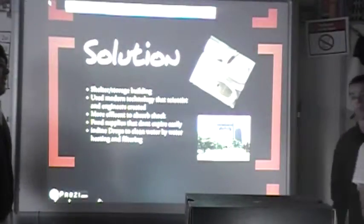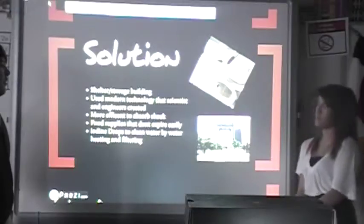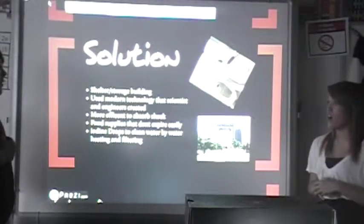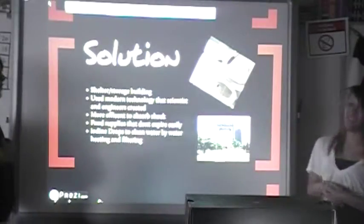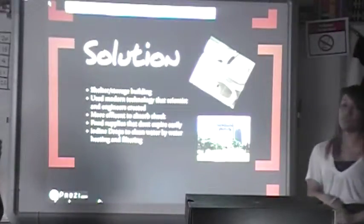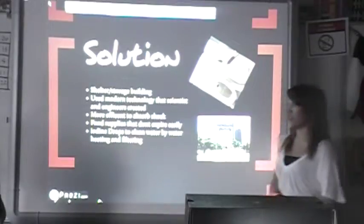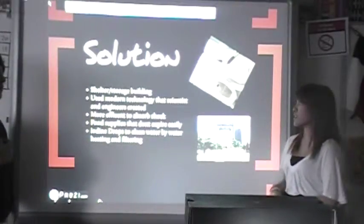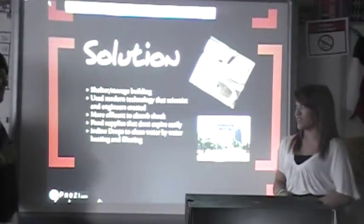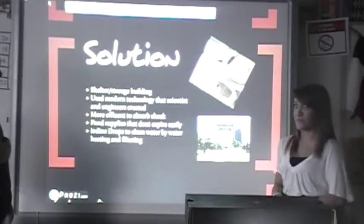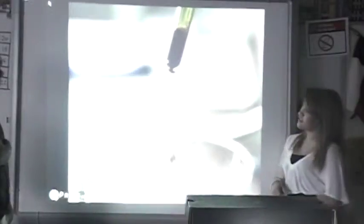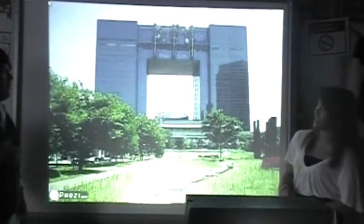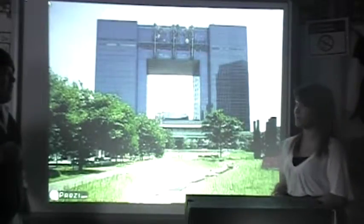Our solution was to build a shelter and storage building that would be structured better so it doesn't collapse as fast. We used modern technology that scientists and engineers created, making it more efficient to absorb the shock of the earthquake. The storage building would hold food supplies that don't expire easily, and iodine drops to clean water by heating and filtering it. This is an example of a building in Japan that is created to absorb the shock of the earth.